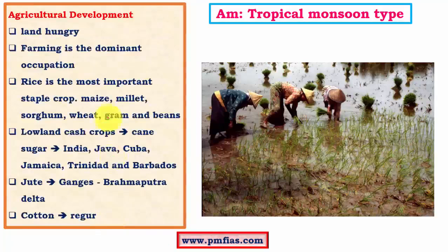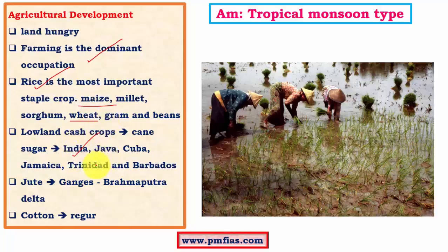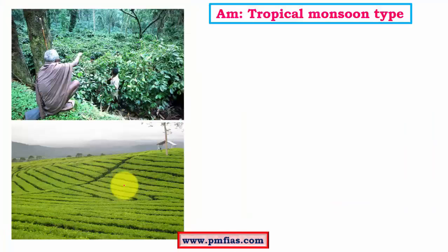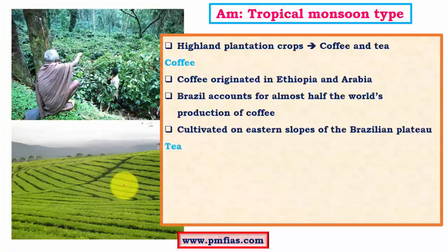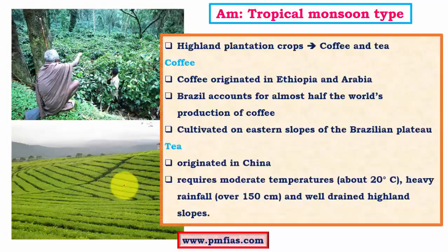Agriculture is the dominant occupation. The most important crop is rice, along with maize and wheat. Lowland cash crops include sugarcane, grown in India and the Cuba region — Cuba is called the sugar bowl of the world. Jute production is intense in the Ganges and Brahmaputra delta. Cotton production is significant in Maharashtra with thick black cotton soil called regur. Other important plantation crops are coffee and tea, which are highland plantation crops unlike sugarcane.